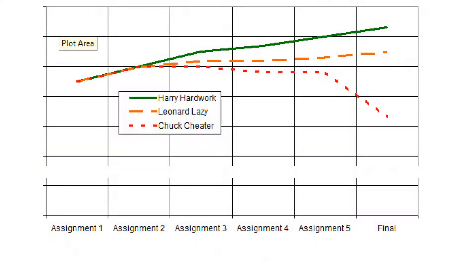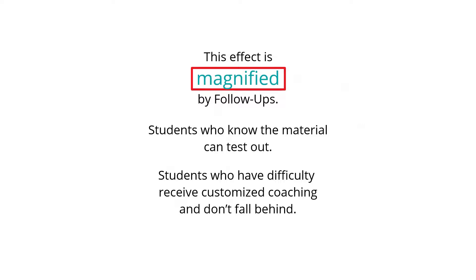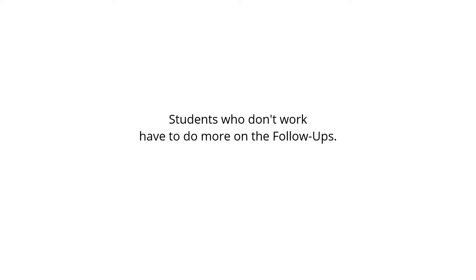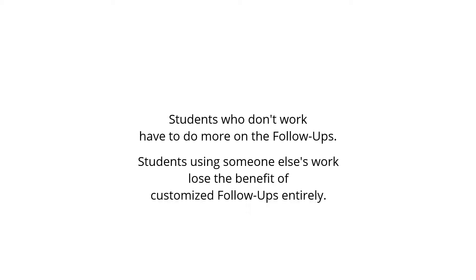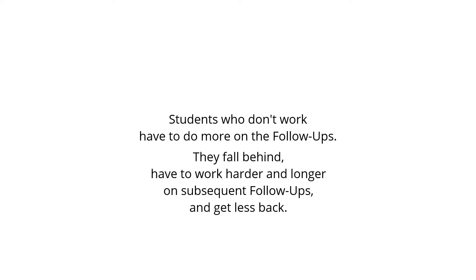We have heard from users that test-out motivates students to work harder on the parent assignment. We recommend a test-out score of at least 90 percent. Follow-ups reward honest work. In Mastering, students who take hints and work through problems already get higher exam and final grades than students who don't work or who cheat. This effect is magnified by follow-ups. Students who know the material can test out. Students who have difficulty receive customized coaching and don't fall behind. Students who don't work have to do more on the follow-ups, and students using someone else's work lose the benefit of customized follow-ups entirely — they fall behind, have to work harder and longer on subsequent follow-ups, and get less back.